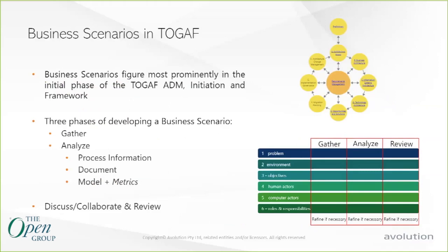TOGAF does actually describe scenario definition in a bit of detail. It follows relatively closely to how we at Avolution tend to deploy Abacus. The last thing we want to do is deploy Abacus as just another system that has to be integrated and maintained. The idea is that we start relatively small, and this gather, analyze, review process is effectively what you go through for any of the scenarios that you develop — capturing business and technology landscapes, providing graphical forms, and making sure that's connected to other areas of the organization.